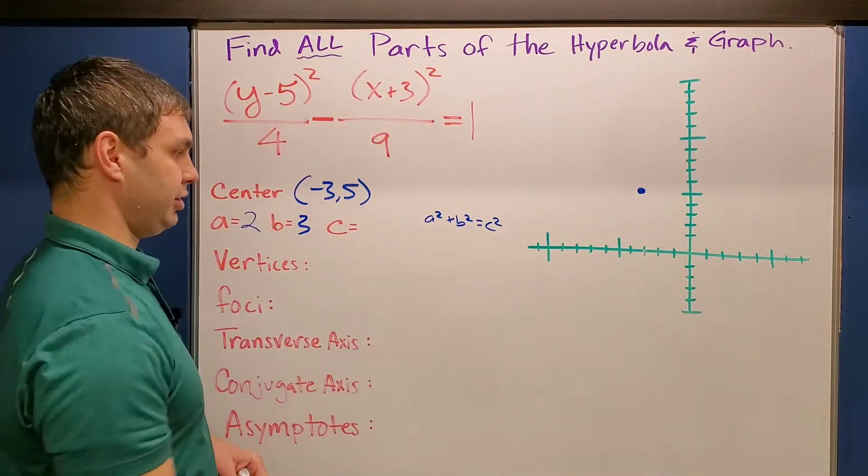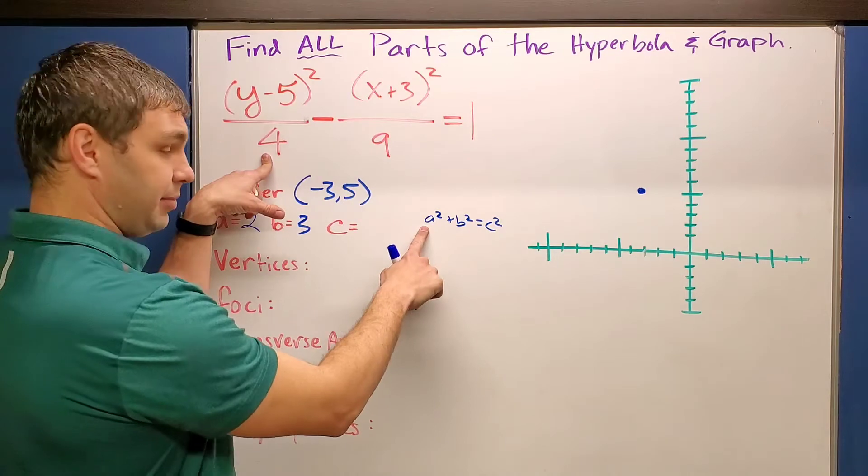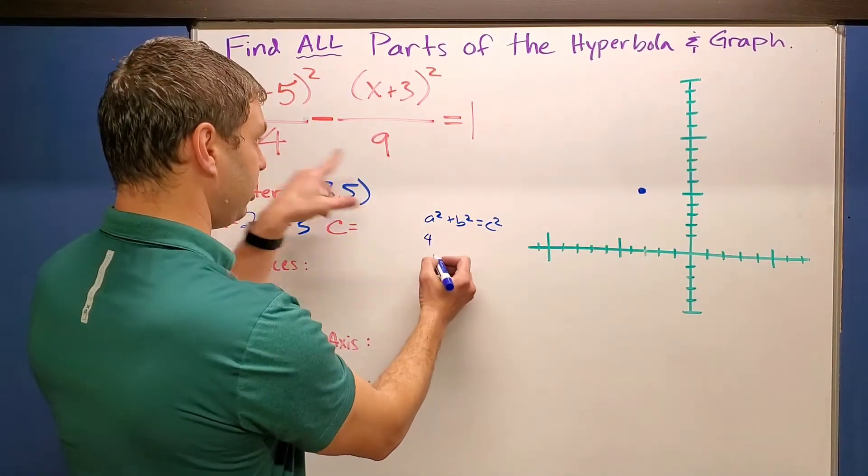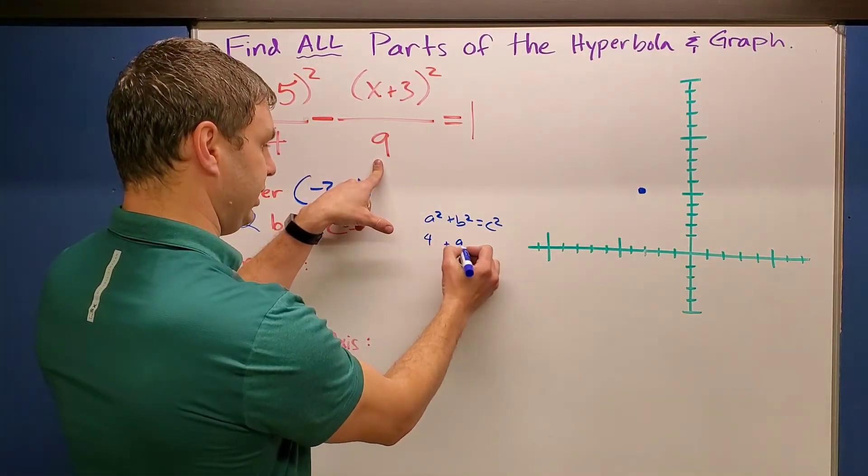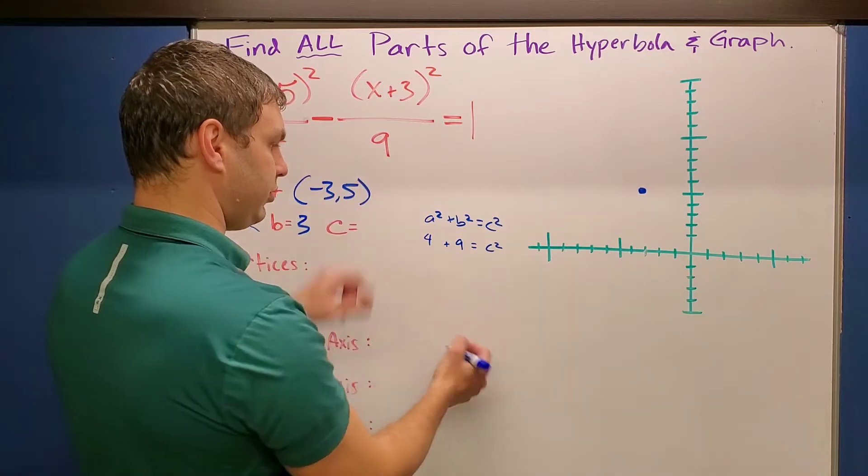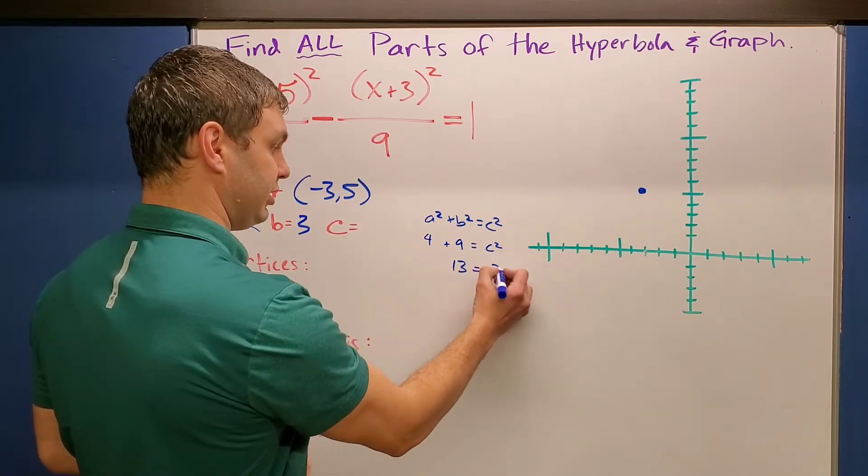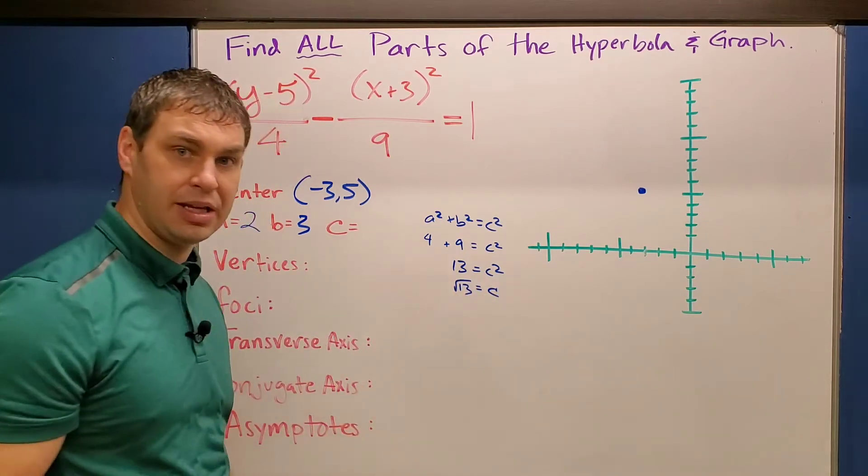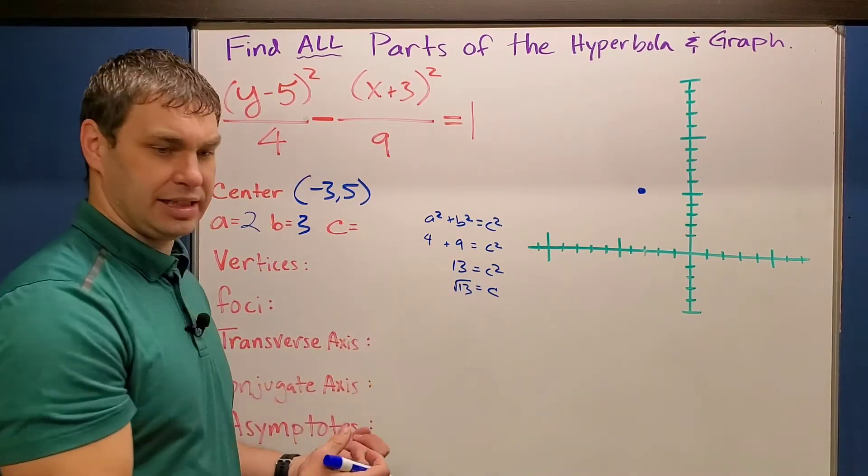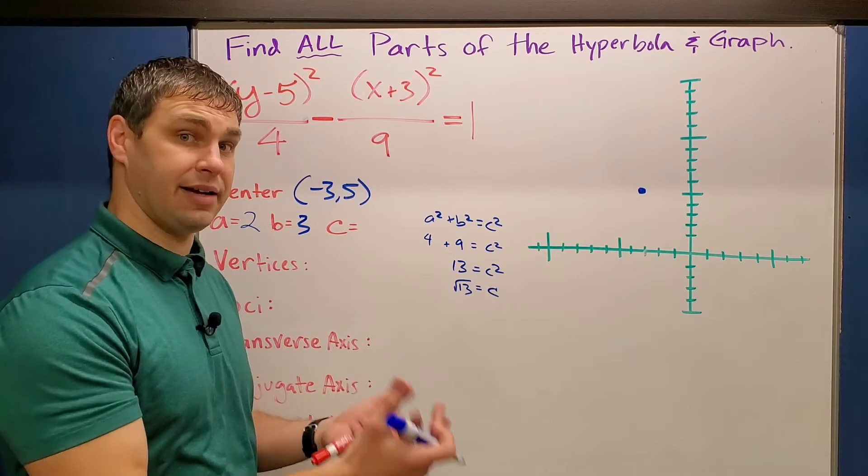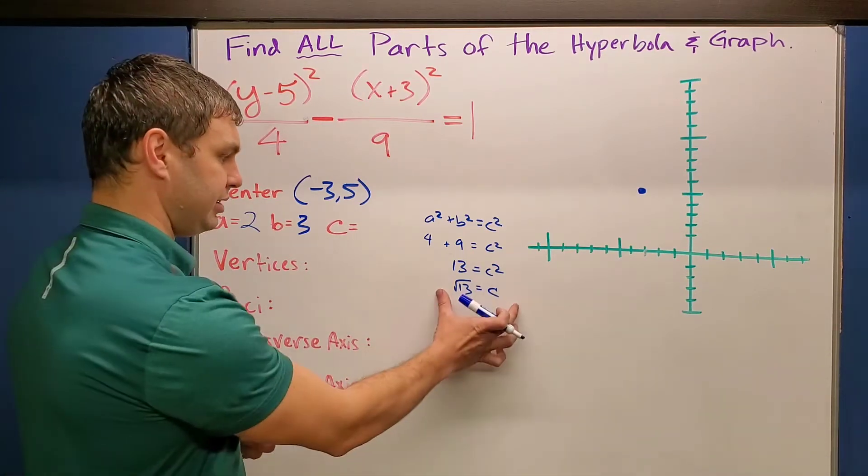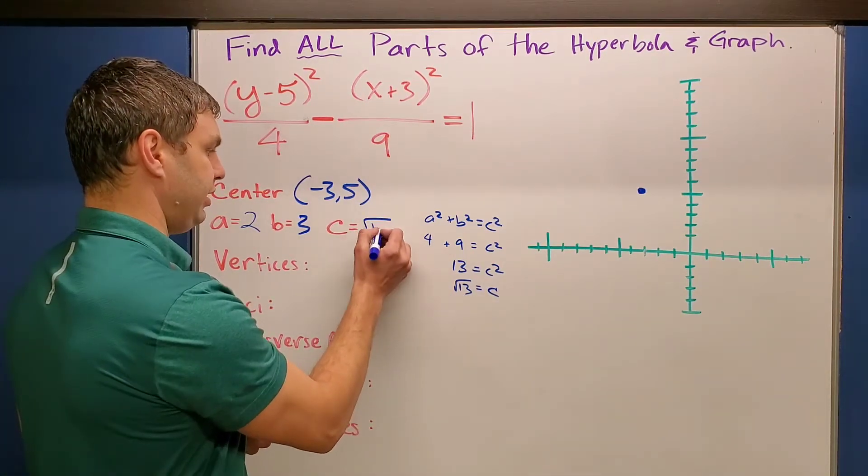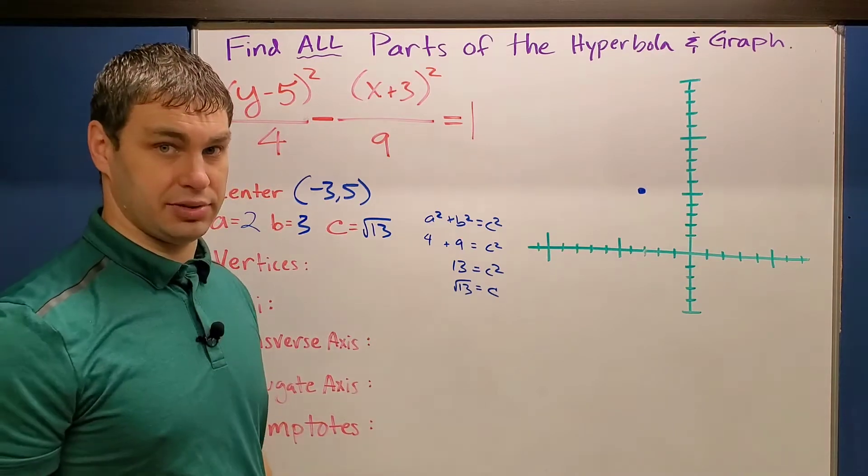So in this case, this number right here is my a squared. So I can just replace this with 4, replace this one with 9 for the b squared, and then equals c squared. So this is going to be 13 equals c squared, or c equals the square root of 13. Now, sometimes if that can be simplified, like if it was the square root of 50, you can make that five square roots of two. But in this case, we just have to leave it as the square root of 13 for our c.